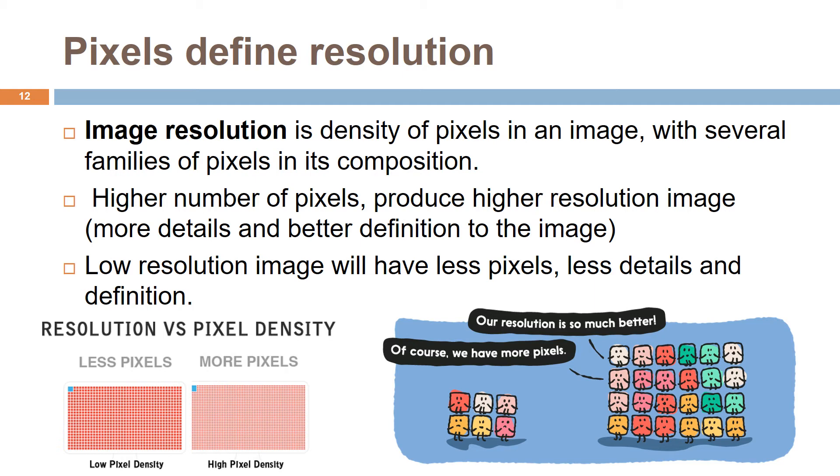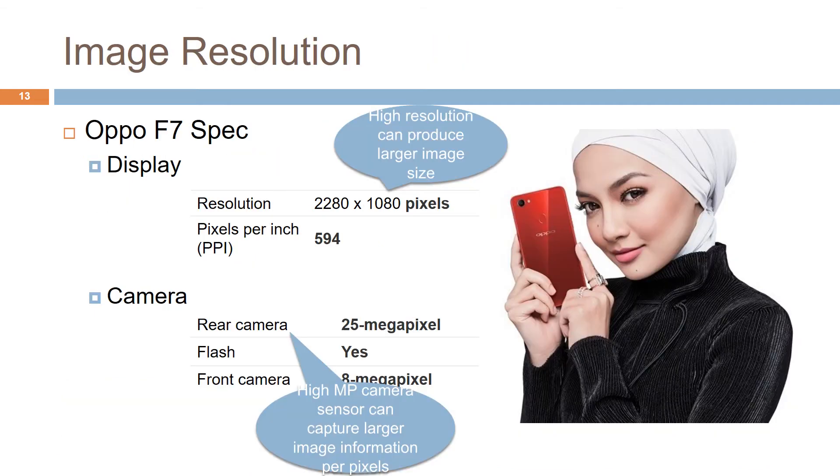Logically, an image with low resolution will have less pixels, less details and definition. For example, this Oppo smartphone has higher resolution to produce larger size images, and the rear camera has 25 megapixels to capture larger image information per pixel. The image resolution is determined by the pixels per inch, PPI, and dots per inch, DPI, calculations.